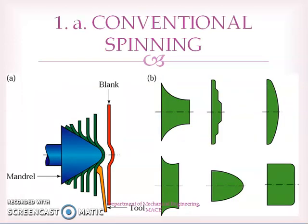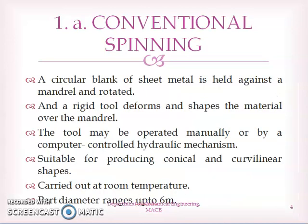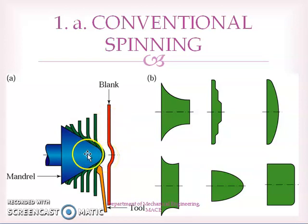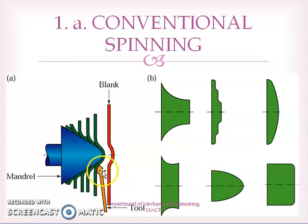First we will see conventional spinning. In conventional spinning, a circular blank of sheet metal is held against a mantle and rotated. This is the mantle, and this is the circular metal sheet or blank. The mantle is rotated and we exert a force by using this tool, pressing the metal sheet towards the mantle.